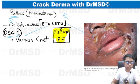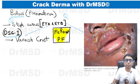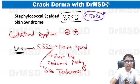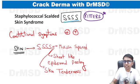Because Desmoglein 1 is present only in the skin, bullous and vesicular lesions are produced only on the skin. The mucosa is spared because it has Desmoglein 3 in higher concentrations. In patients with Bullous Impetigo as well as Staphylococcal Scalded Skin Syndrome, the same exfoliative toxins A and B spread hematogenously.